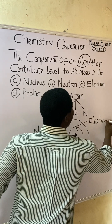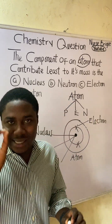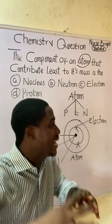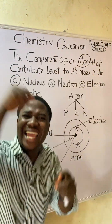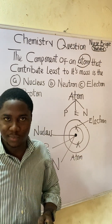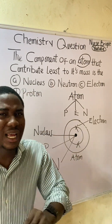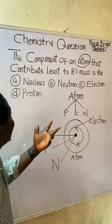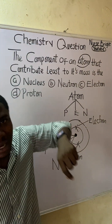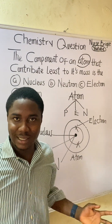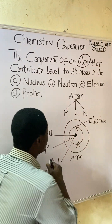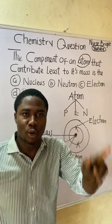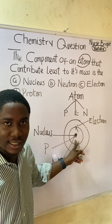According to a scientist called Lord Ernest Rutherford, he said that the mass of an atom is concentrated inside the nucleus. So the mass of an atom is concentrated inside the nucleus. The questioner asks: the component of an atom that contributes least to its mass is what? We already know that the mass is concentrated in the nucleus, and inside the nucleus we have protons and neutrons.